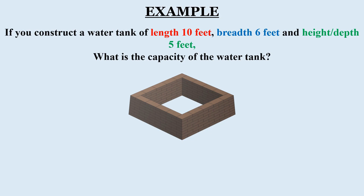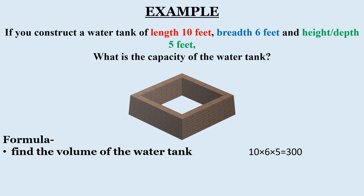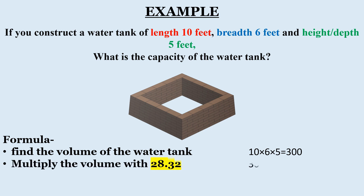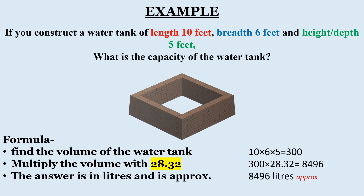Like we mentioned earlier, the formula we require is the volume of a cuboid. First, find the volume: length into breadth into height, which in our case is 10 into 6 into 5 equals 300 cubic feet. Second step is to multiply the volume by 28.32: 300 into 28.32 gives 8496 liters. This is a simple method to calculate the capacity of a water tank if measurement is taken in feet.